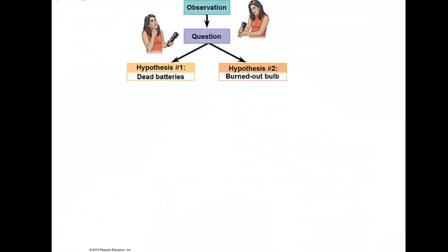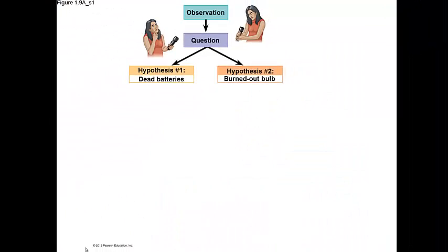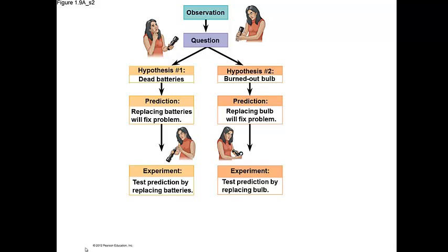So we solve problems every day by using hypotheses and an example would be the reasoning we use to answer the question, why doesn't this flashlight work? Using deductive reasoning, we realize that there are two possible reasons. One, the bulb, two, the batteries. There might be other things we can think of, but let's just keep it to these two. So each of these, the hypothesis must be testable and the hypothesis must be falsifiable.